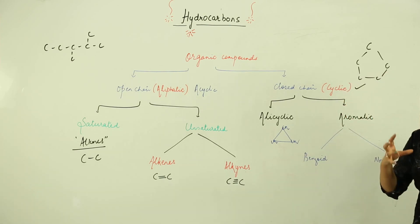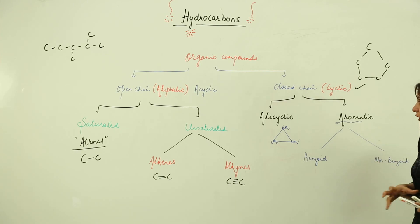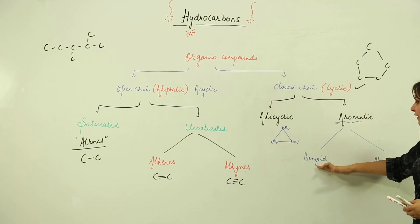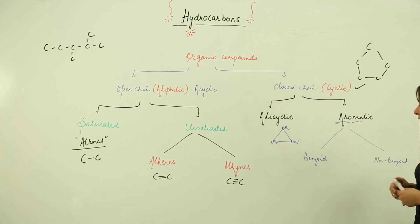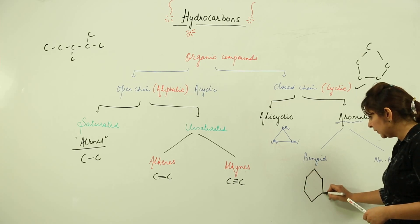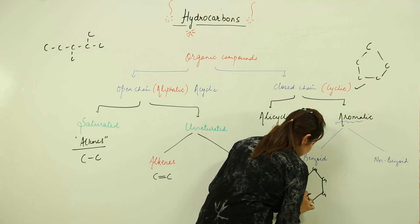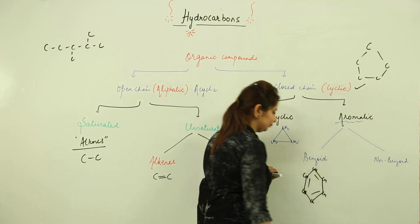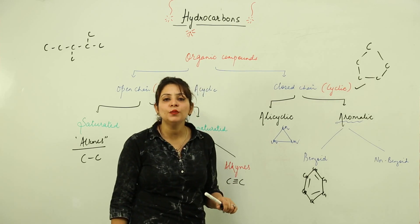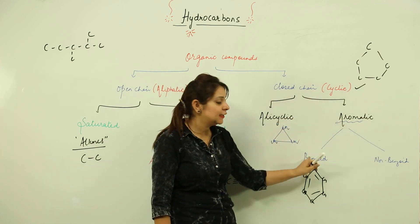For example, a structure where each corner represents a CH₂ group is an alicyclic compound — a cyclic ring. When we talk about aromatic compounds, as the name suggests they have a typical aroma or fragrance. Aromatic compounds consist of a ring-like structure and are divided into two categories: benzoid and non-benzoid. If an aromatic compound contains a benzene ring — a ring of six carbons connected with three alternate double bonds — it is benzoid.